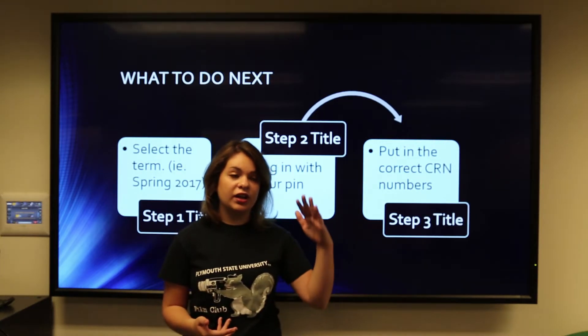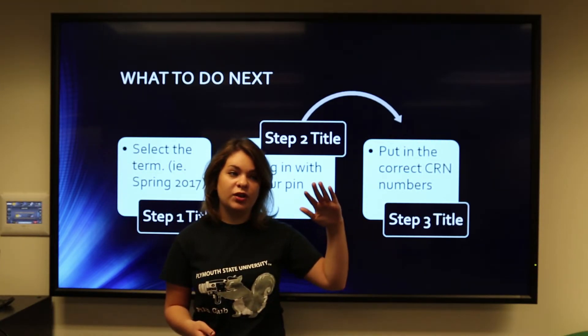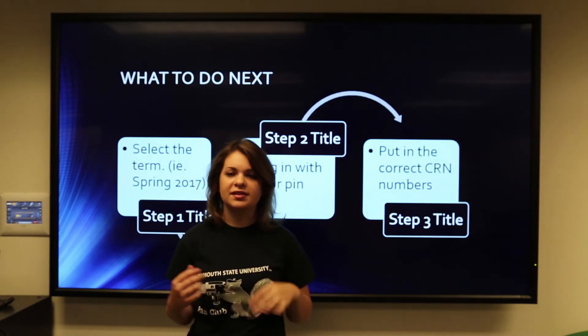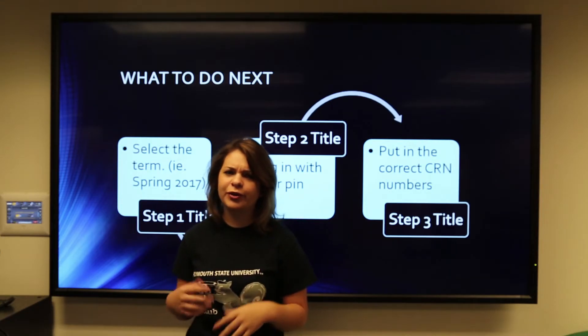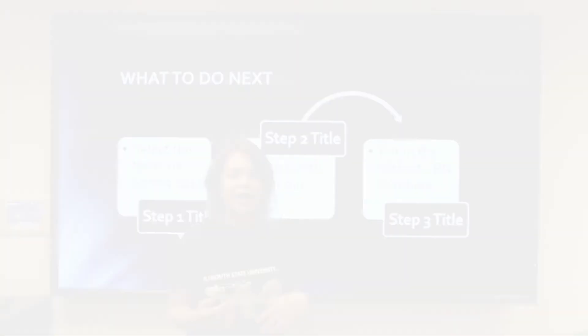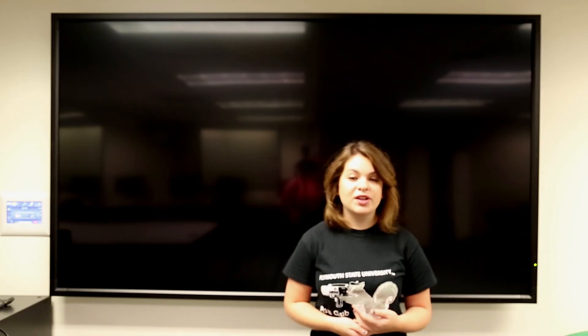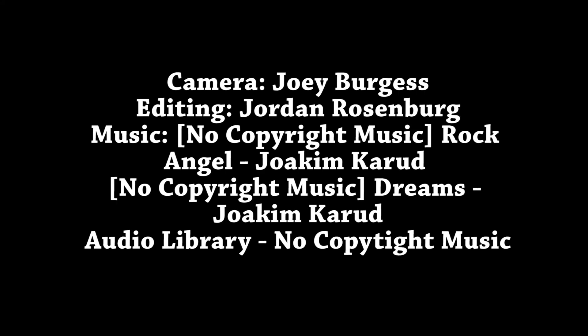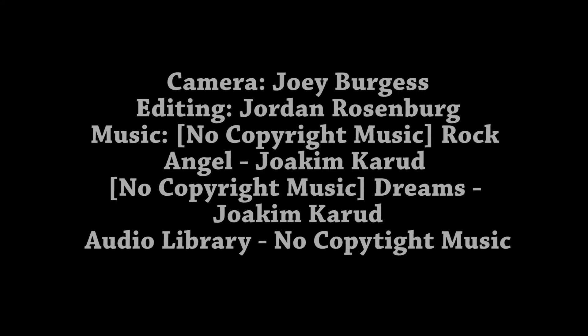At your advisory meeting, your advisor is going to give you a PIN number to log in with, so make sure you have that ready to go. After you select your term, you're going to log in with your PIN. And after that, really simple — just put in all of your CRN numbers on the bottom of the registration page and click Submit. You're going to want to make sure that you got all the right classes just in case an error occurred. It probably won't, but just make sure.